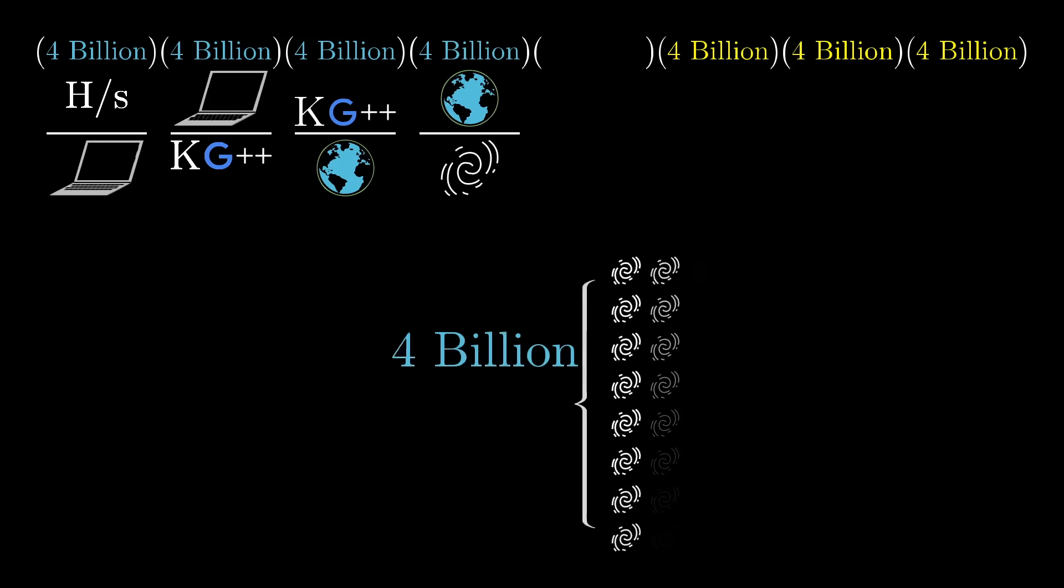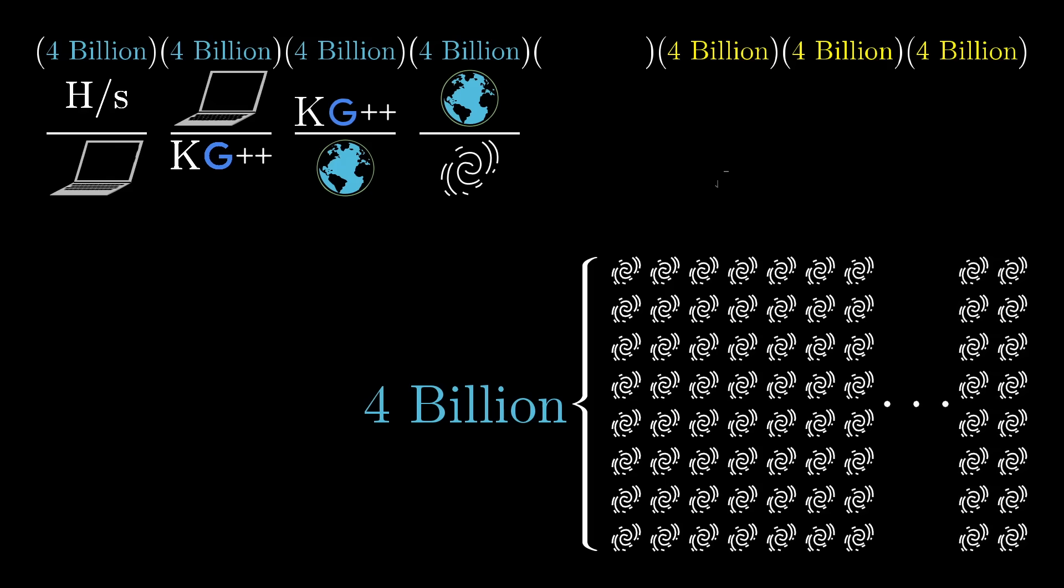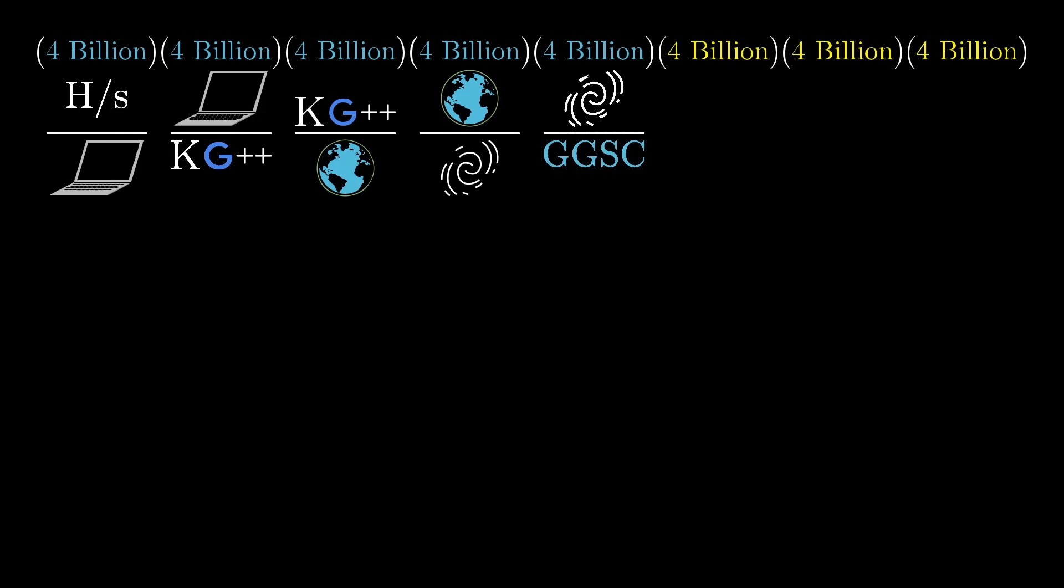Next, try to imagine 4 billion copies of the Milky Way. And we're going to call this your gigagalactic supercomputer, running about 2 to the 160 guesses every second.